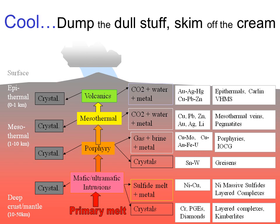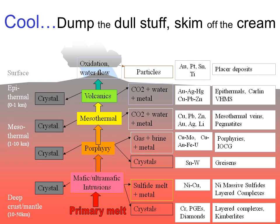Finally, when we get up to the surface and the surface rock is rained on, it starts to weather — oxygen comes in from the atmosphere and water from the rain and those react with the rocks to break them down. This can produce two forms: particulate form where the metals — gold, platinum, tin, and titanium — are forming placer deposits, washed down in streams and concentrated by water movement; or the metals go into solution, such as copper and uranium, and are then deposited downstream in secondary copper deposits around weathering copper porphyries, or in roll-front uranium deposits.